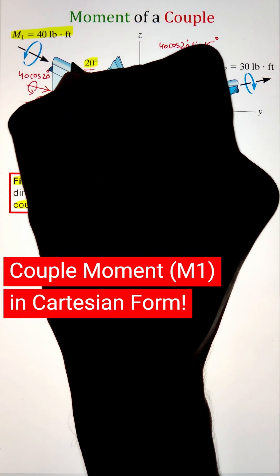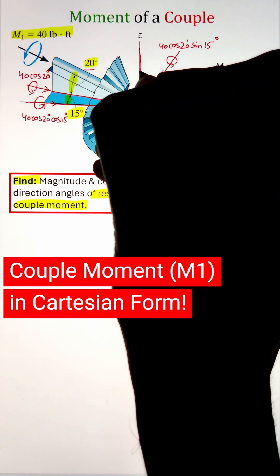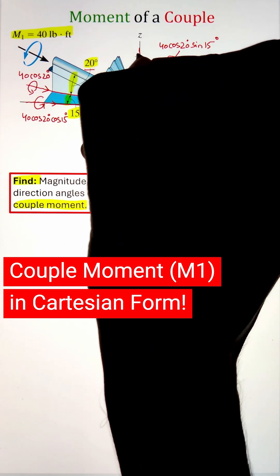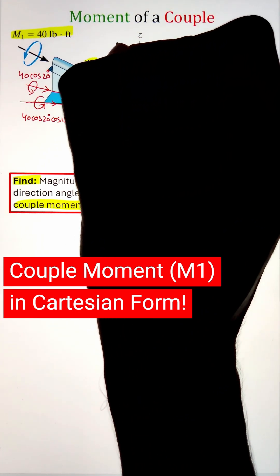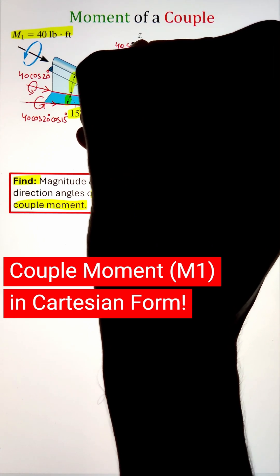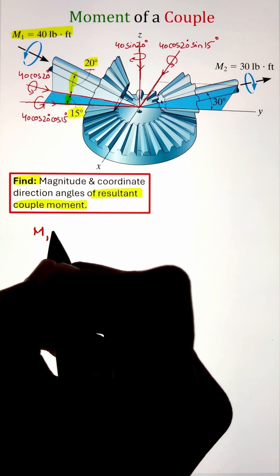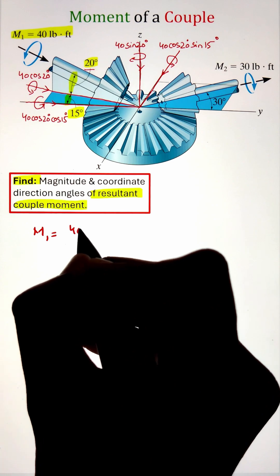Finally, we need to identify the component along the z-axis. So 40 multiplied with sine 20 will project it along the z-axis. However, since this is acting in the downward direction, it will be taken as negative.